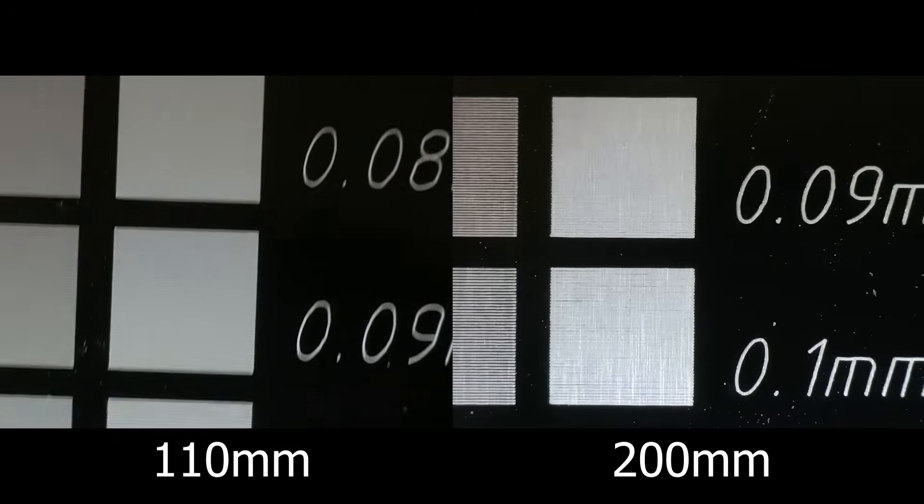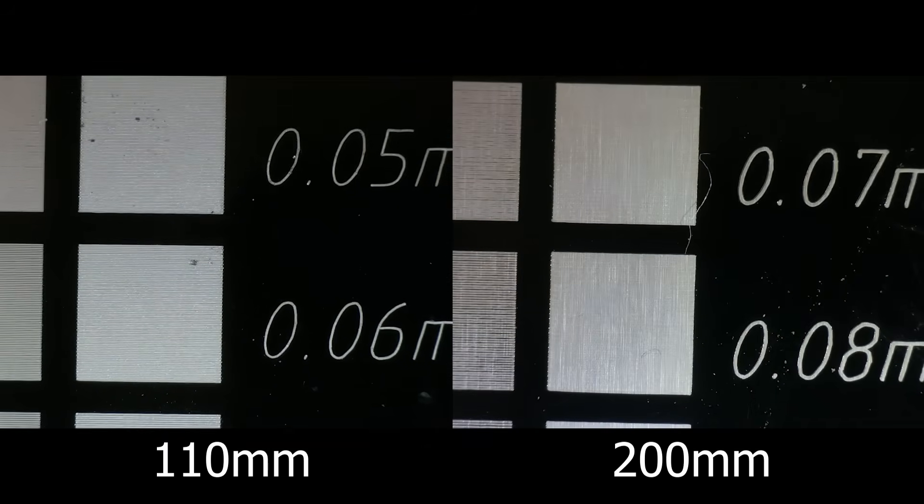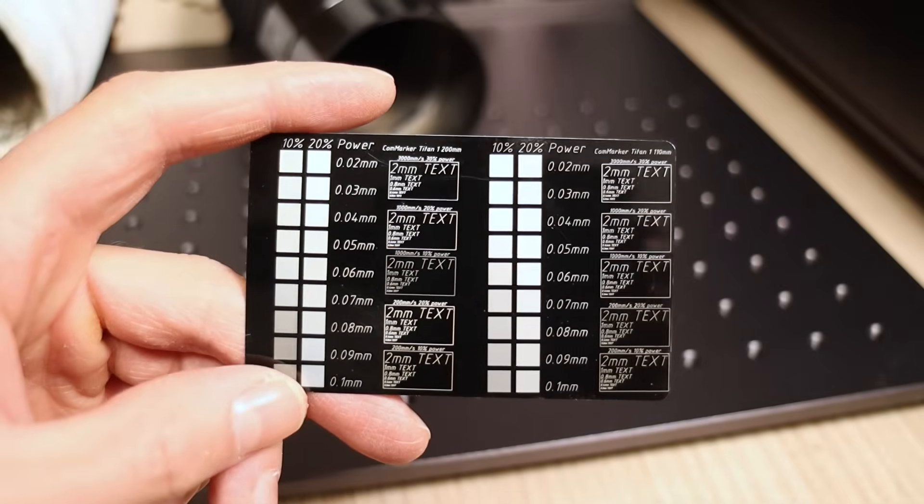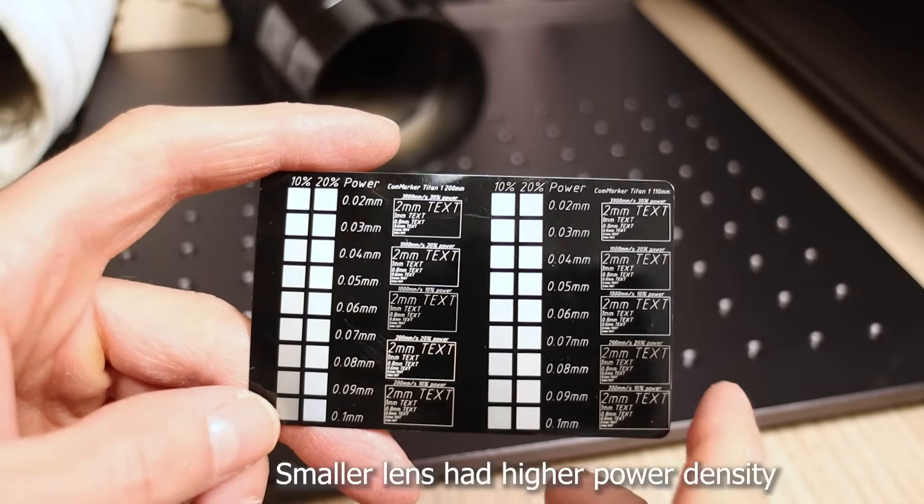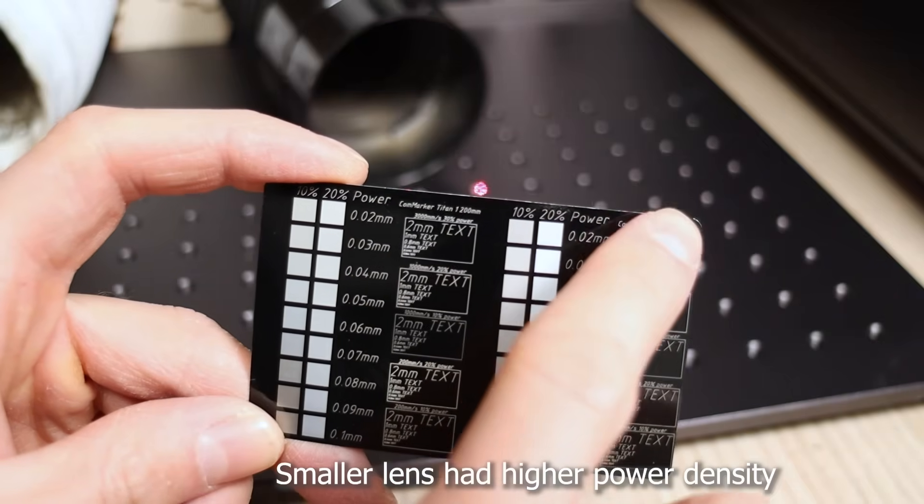The laser spot size for the 200mm lens is around 70 microns, while the 110mm lens produces a spot size of about 50 microns. Since the test was conducted using the same power settings, the laser spot would be even smaller with the 110mm lens.